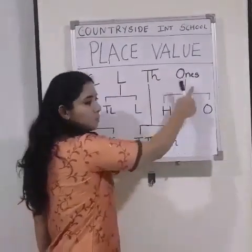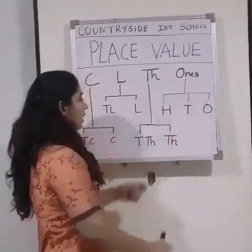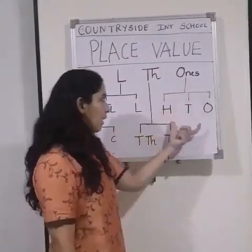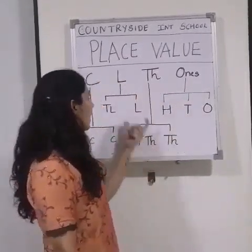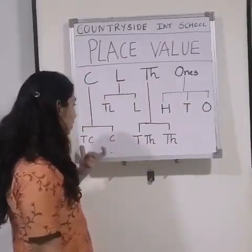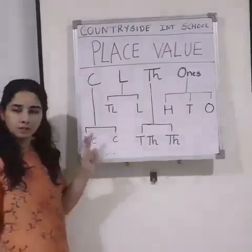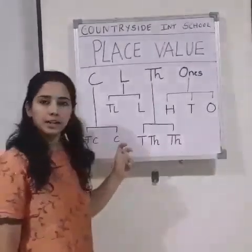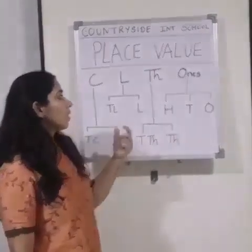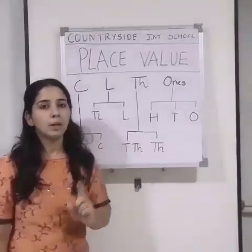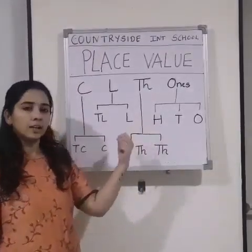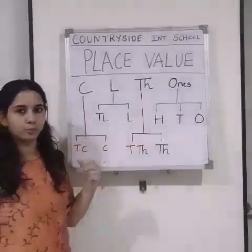These periods — ones, thousands, lakh, crore — make up the Indian place value system. In the Indian place value system, we put commas first after 3 digits, then after 2, then 2, and then 2.